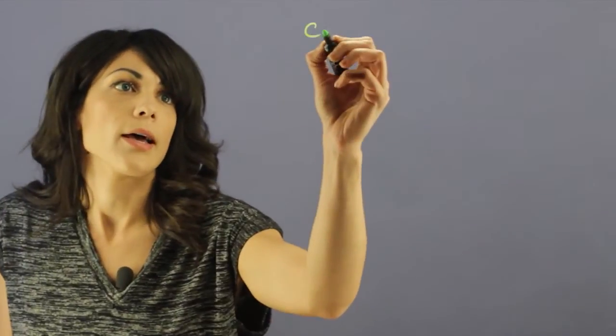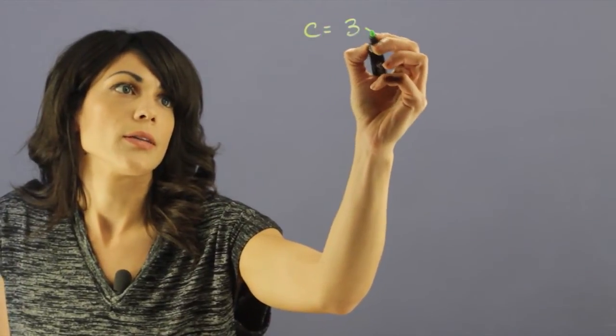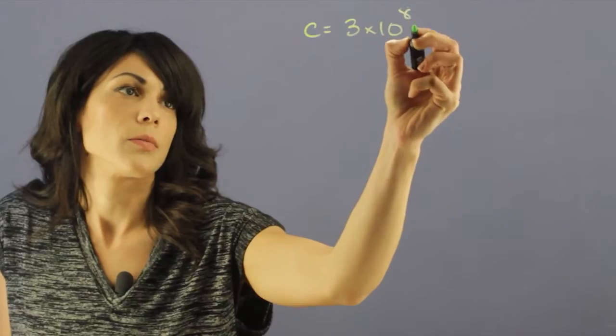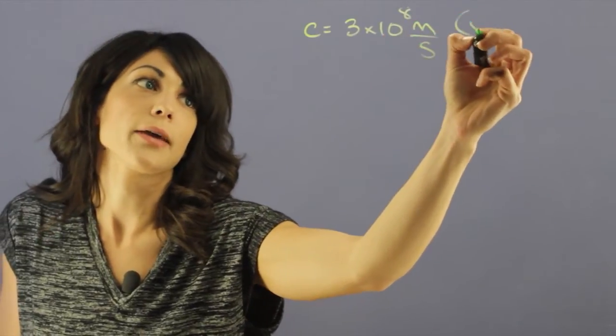Light is the fastest speed that we can observe, and c is 3 × 10^8 meters per second in a vacuum.